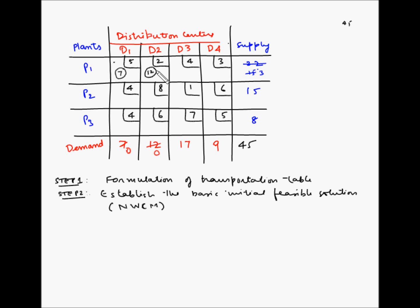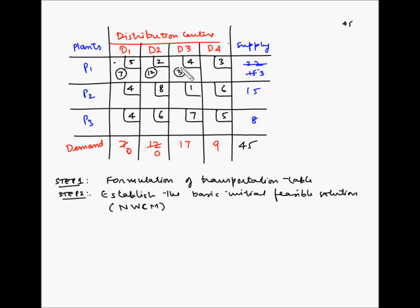The demand at D2 has been completely satisfied, but there is still supply capacity remaining for P1, so we continue with the same row and move to square P1D3. For P1D3, the supply is 3 and demand is 17, so we allocate 3 units. The remaining demand for D3 is 17 minus 3 = 14 units, while the remaining supply capacity for P1 is 3 minus 3 = 0. P1 is now completely exhausted.